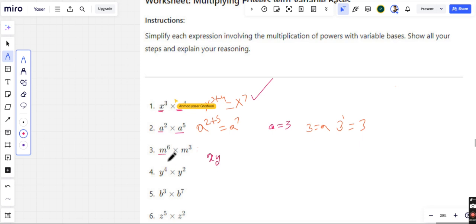Instead of M everywhere, you put X and Y. So that equals XY to the power of 6 times XY to the power of 3.